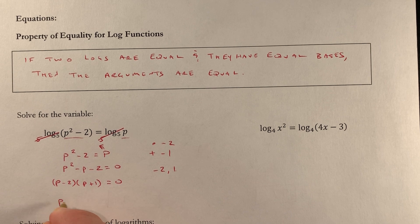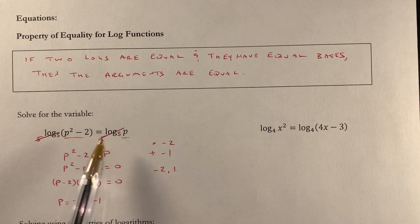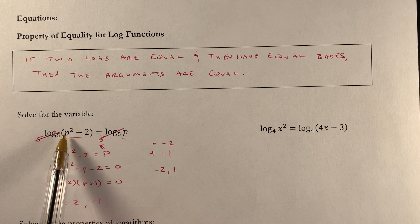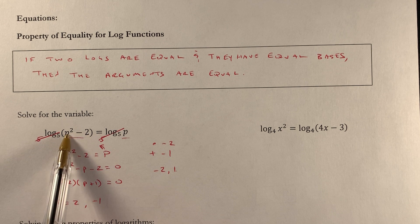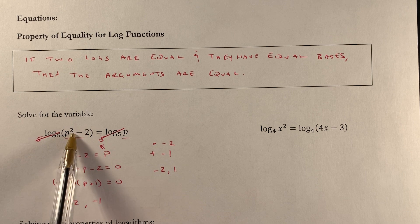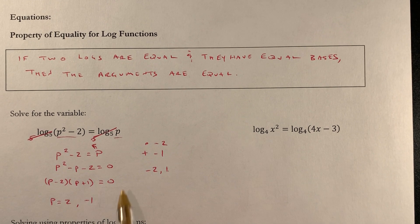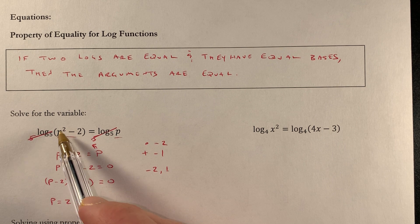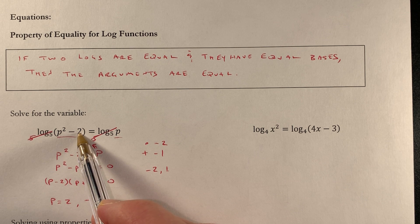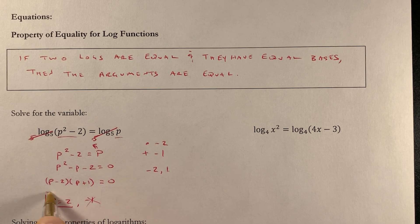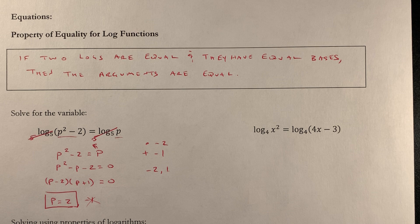That gives me two solutions: p equals 2 and p equals negative 1. I have to check that the arguments are positive. If I put in 2: 2 squared minus 2 equals 4 minus 2 equals 2, which is positive — so p equals 2 checks out. If I put in negative 1: negative 1 squared is 1 minus 2 equals negative 1, which is negative. I cannot keep negative 1 because it gives a negative argument. Always plug answers back into the original to make sure you have a positive argument.